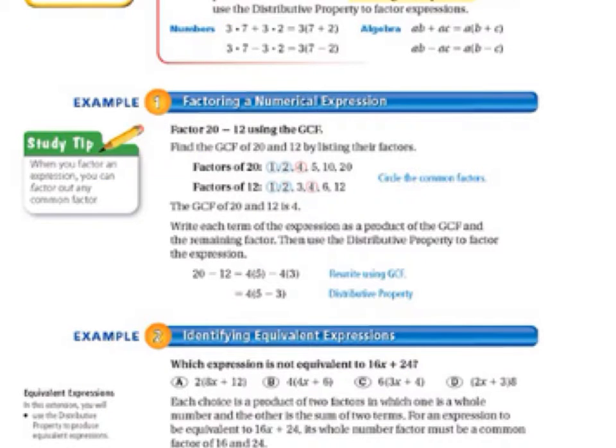Now, let's take a look at example 1, factoring a numerical expression. Our directions are factor 20 minus 12 using the GCF, the greatest common factor. Find the GCF of 20 and 12 by listing their factors. We could also use the prime factorization. When we find the greatest common factor of 20 and 12, we learn that it is 4.